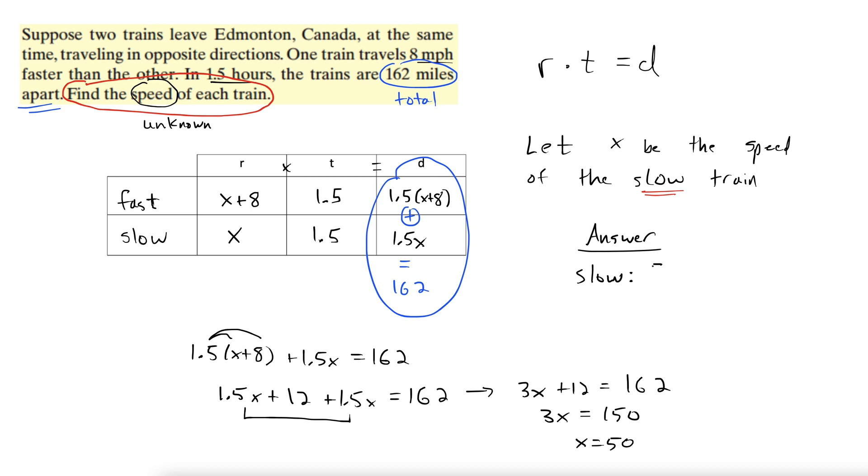Here's our answer. The slow train: we already know it's 50. 50 what? Miles? Days? Years? We're talking about rate here. x is the rate, so it's miles per hour. Units are important. And the fast train: well, the fast train is just 8 miles per hour faster than the slow one. So 50 plus 8, 58 miles per hour. There's our two trains.